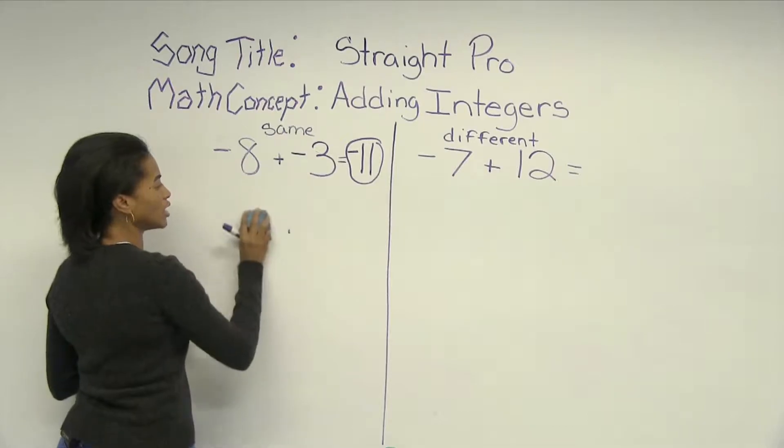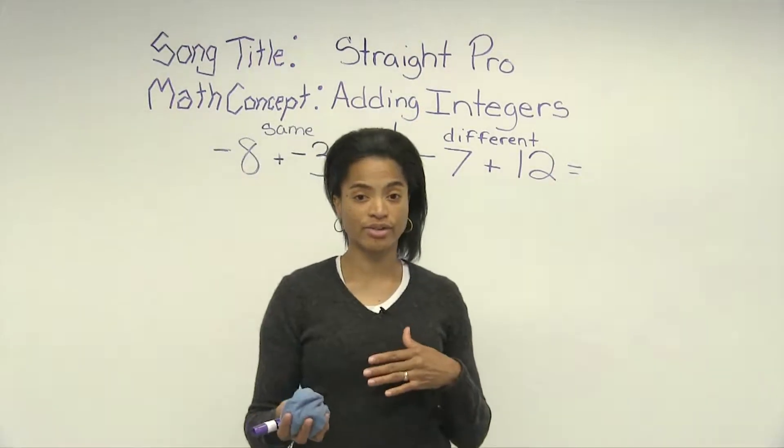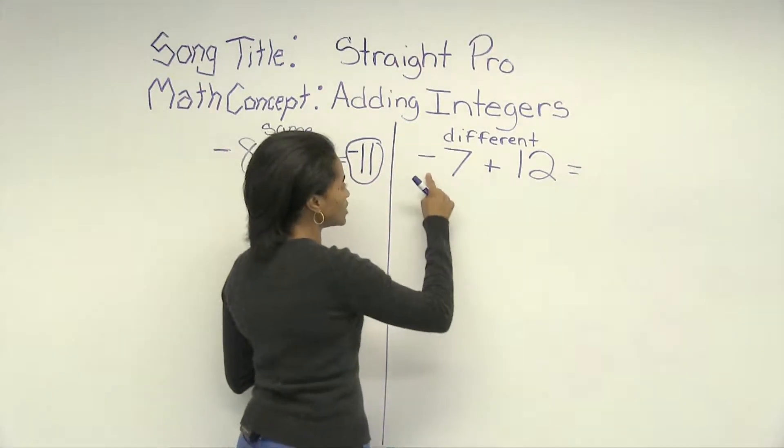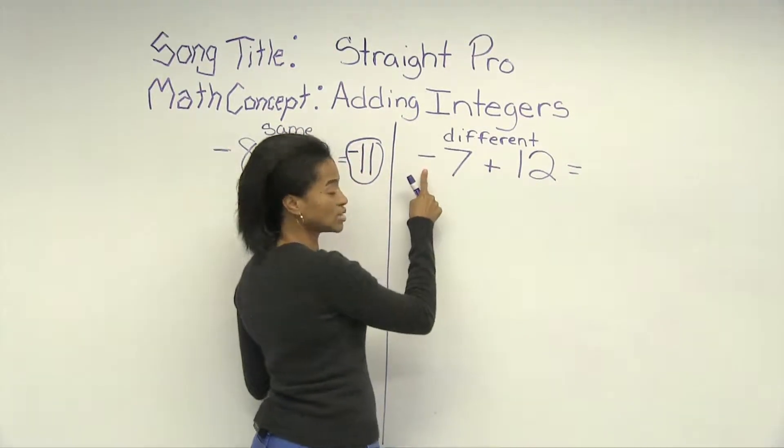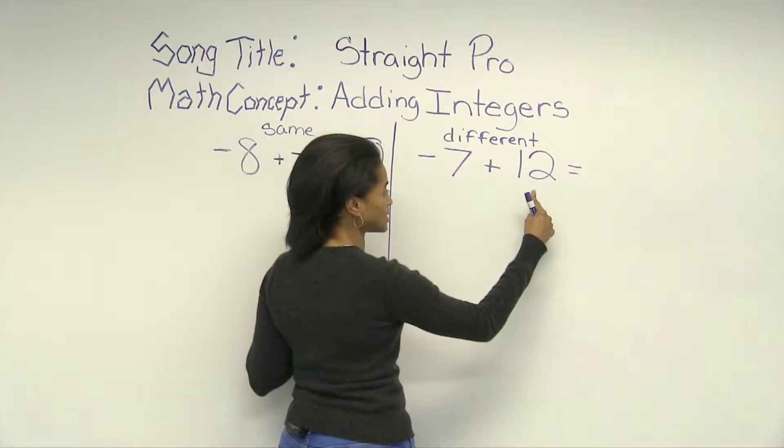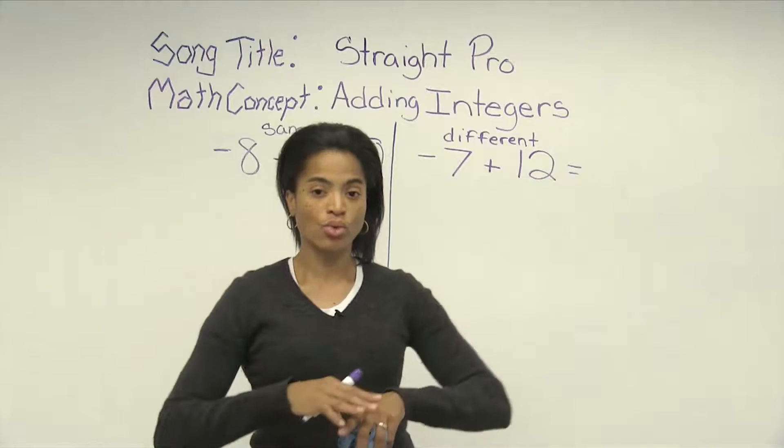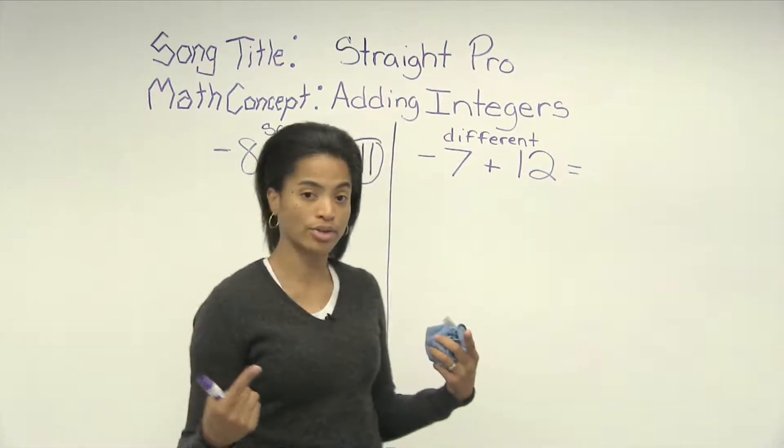And so over here, in the lyrics we heard, if they're different, take the bigger one, subtract it. What does that mean? When the signs are different, this integer is negative, this integer is positive. Take the sign of the integer with the greatest absolute value.